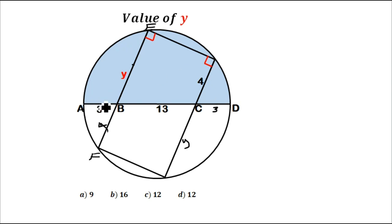You can see chord AD and EF are intersecting at B. So if you use the theorem of intersecting chords, then AB times BD...